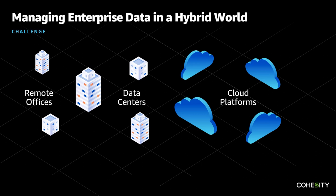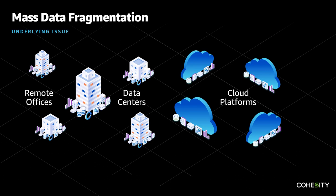Here's a look at your infrastructure. We have some remote offices, some data centers, and some cloud platforms. The problem is that your enterprise data is fragmented across this whole environment. We refer to this problem as the problem of mass data fragmentation. The result is that you're juggling multiple vendors. It's very inefficient with lots of copies throughout your infrastructure, and your data is dark, which means it's very hard to extract insights from it.